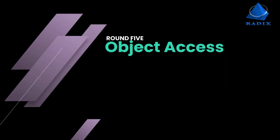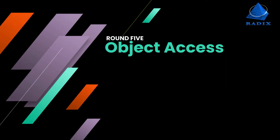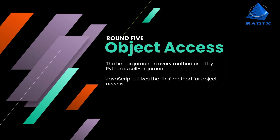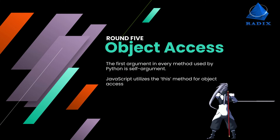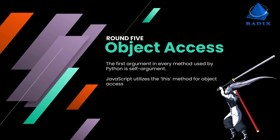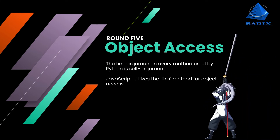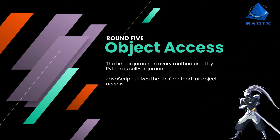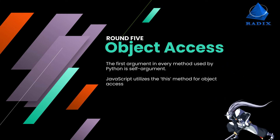And Round 5: Object access. The first argument in every method used by Python is a self-argument. JavaScript utilizes the 'this' method for object access.